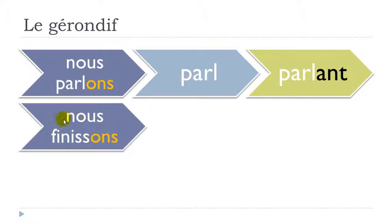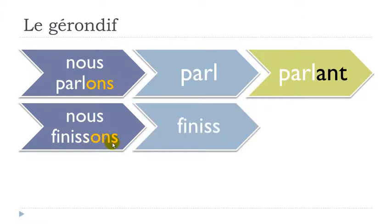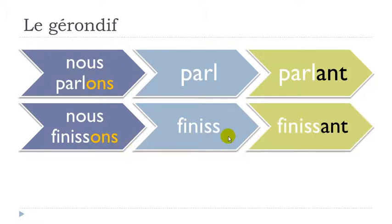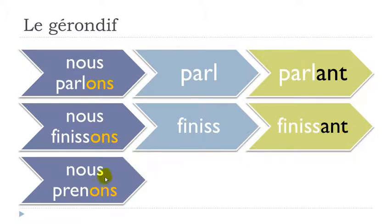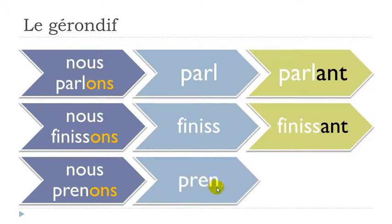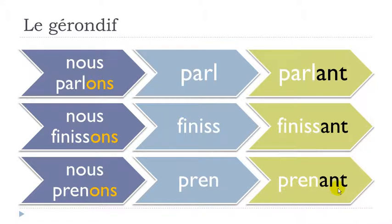For the second group, FINIR — to finish — gives nous FINISSONS at the present tense. We spot the ONS ending, take it away to get FINIS, then add ANT to get FINISSANT. For the third group, PRENDRE — to take — gives nous PRENONS. We remove ONS to get PREN, then add ANT to get PRENANT.